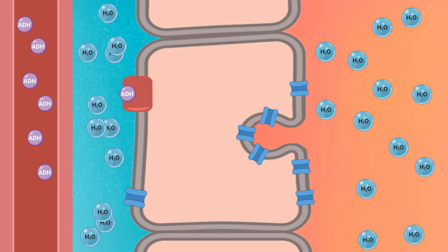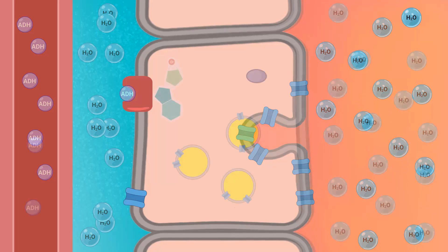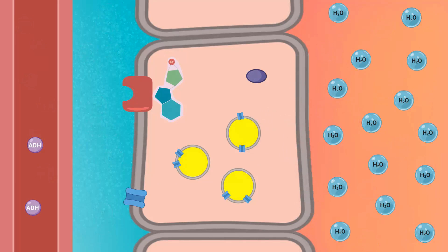When the concentration of ADH decreases, the molecules of aquaporin 2 are shuttled back to the cell cytoplasm and thereby the water channels are removed from the luminal membrane.